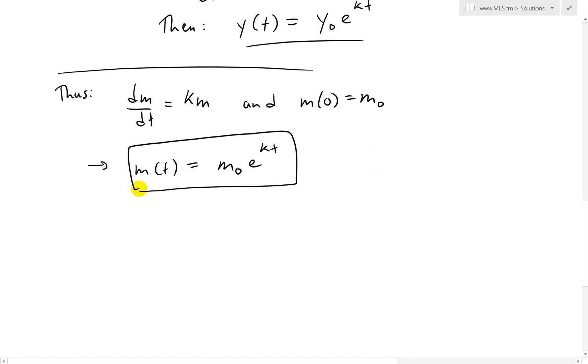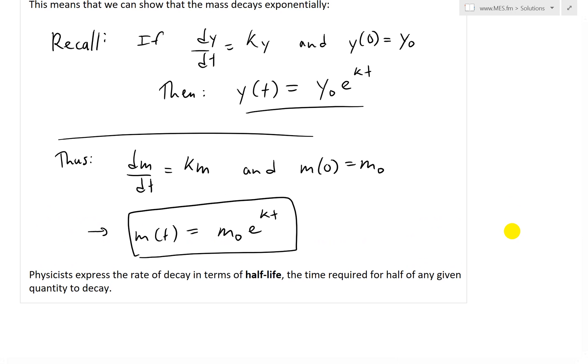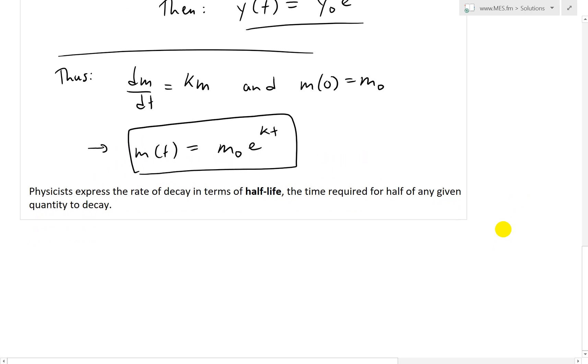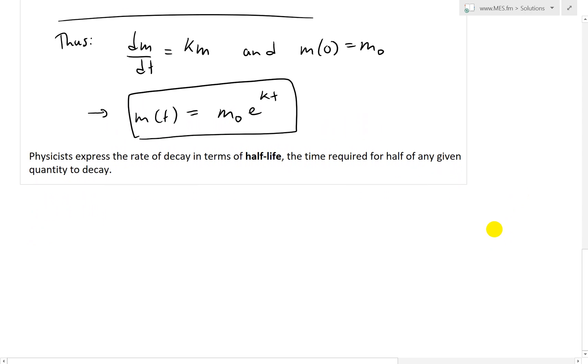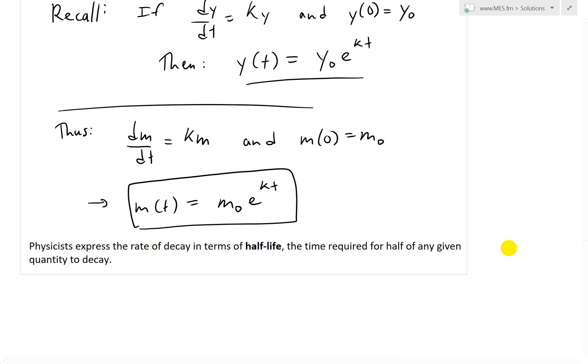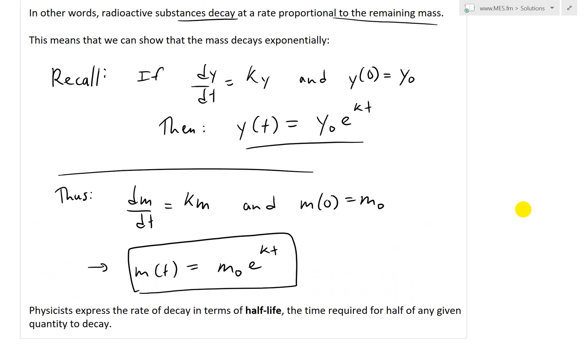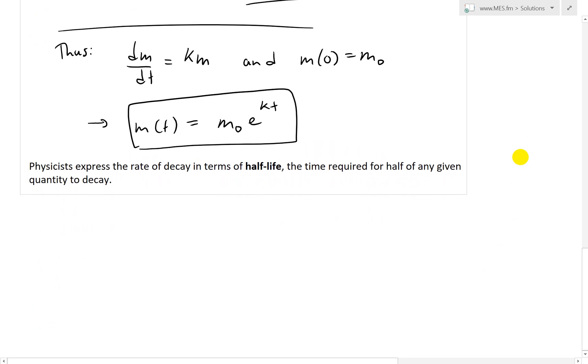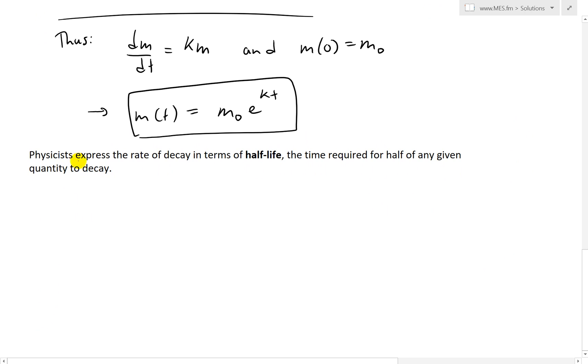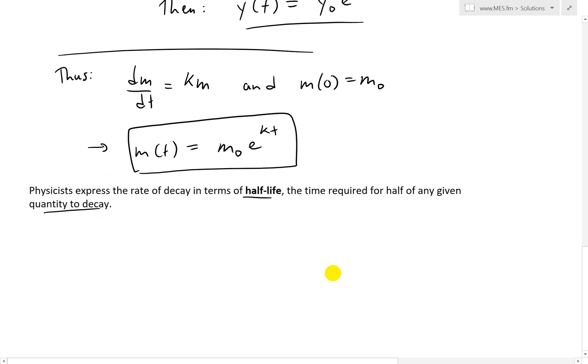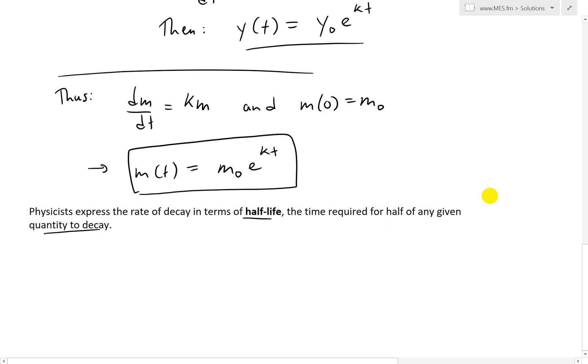We will be using this formula in the next couple of videos. I'm going to go over some examples, one or two examples on radioactive decay or exponential decay. I also want to point out that physicists express the rate of decay usually in terms of half-life, which is the time required for half of any given quantity to decay, and I'll go over some examples in later videos.